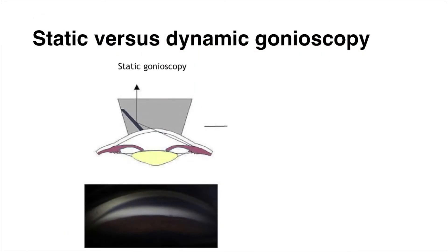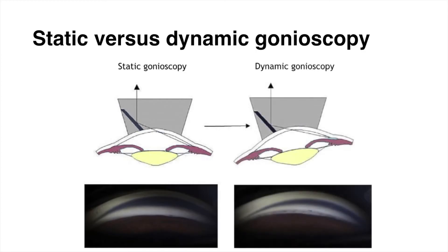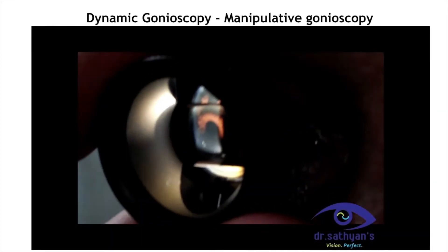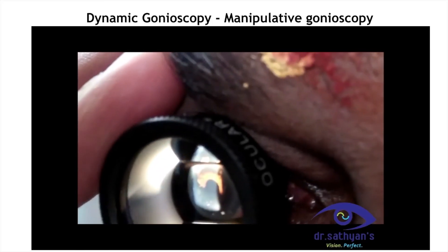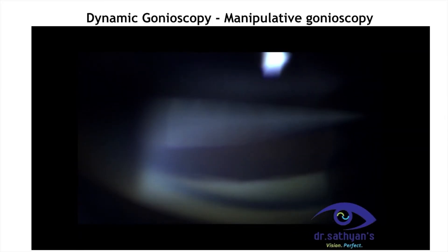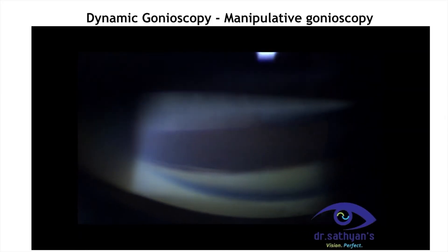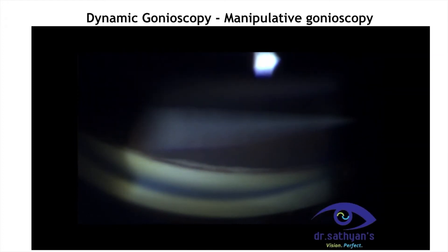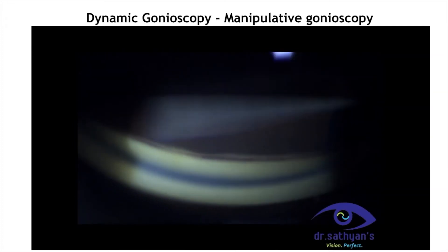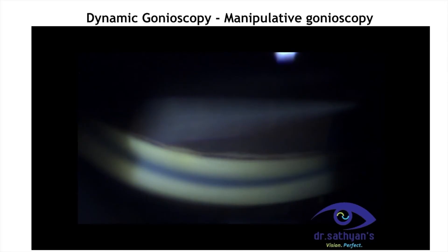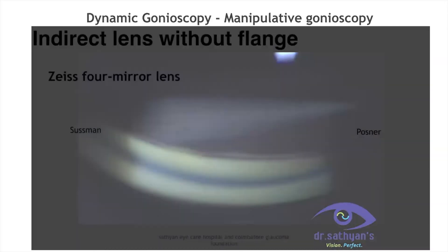In dynamic gonioscopy, we have manipulative gonioscopy and indentation gonioscopy. To begin with, the patient is made to look straight and the inferior mirror is viewed, which shows an upskirt angle. On asking the patient to look towards the inferior mirror — that is, looking downwards — manipulation is ensured, opening the upskirt angles.